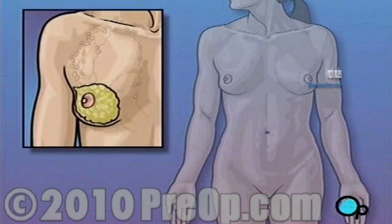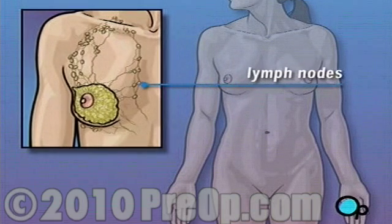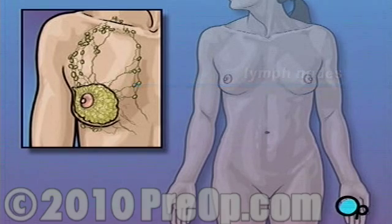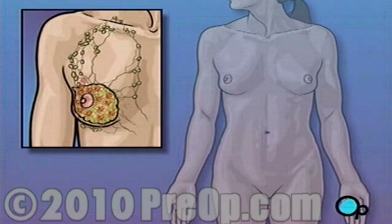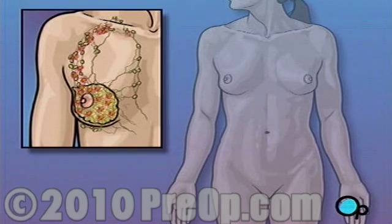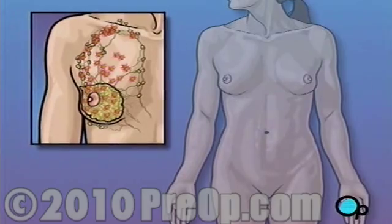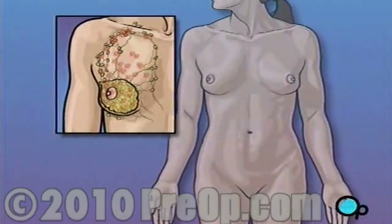Lymph nodes are small junctions that join the vessels that make up the lymphatic system. The lymphatic system circulates a bodily fluid called lymph in the same way that the circulatory system carries blood. Your doctor has recommended that you undergo a modified radical mastectomy because the cancer in your breast may have begun to move into the lymph nodes under your arm as well as into your chest muscle.